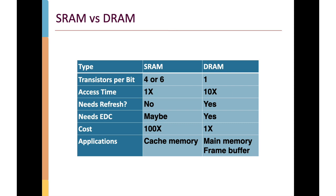Cache memory is often implemented in SRAM because that's where we want speed. Main memory or a video frame buffer is usually implemented in DRAM because we're more interested in larger capacity. Because we can get much more DRAM for the same cost as SRAM, we normally choose DRAM for these applications.